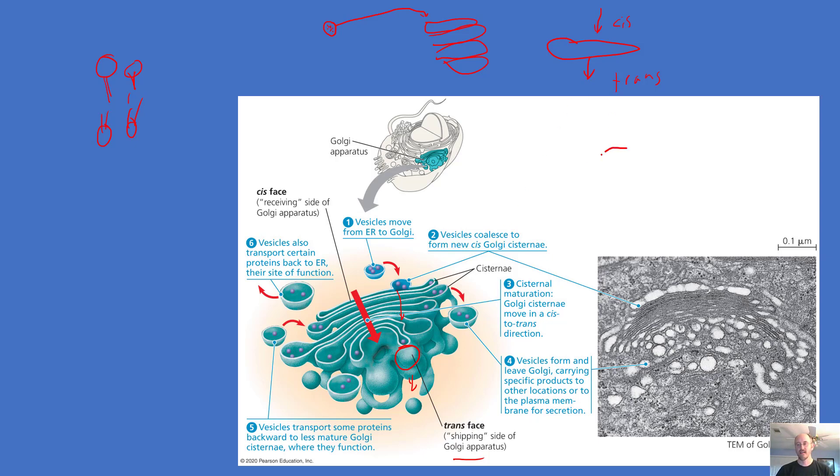I also want to mention that the transport vesicles contain some of the things produced by the ER, for example, and some of the items might actually be embedded in the membrane and cross that membrane, like transmembrane proteins, these integral proteins that cross the membrane, like we saw in that picture of the cell membrane before.